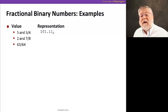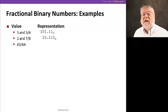For two and seven eighths, it's a very similar thing. The two would be one zero on the left, and the seven eighths would now be a half plus a fourth plus an eighth, or point one one one. And that's the representation for two and seven eighths.